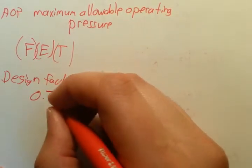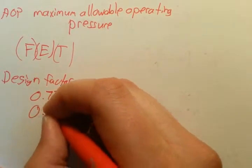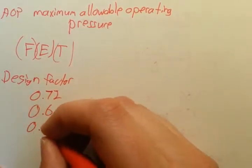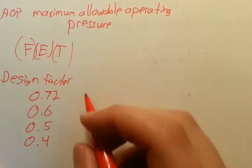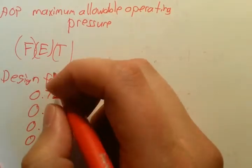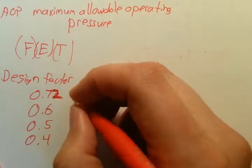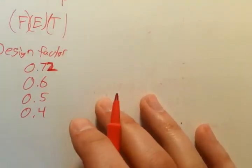It only varies by four, so 0.72 is class 1, 0.6 is class 2, 0.5 is class 3, 0.4 is class 4. I'll probably have to make an entire separate video on design factors; it gets a little more detailed. But just for now we'll keep those and do an example using them.